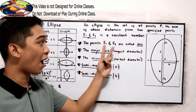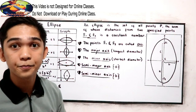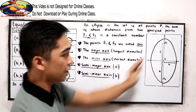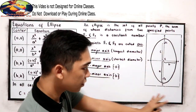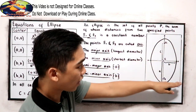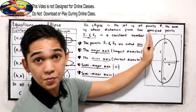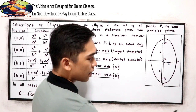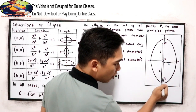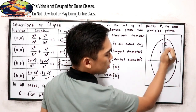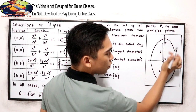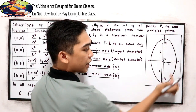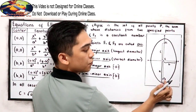Since we have two points, we call them foci. In our graph, this is the graph of an ellipse — an elliptical shape. And here is our focus, the other focus — our foci, F sub 1 and F sub 2.